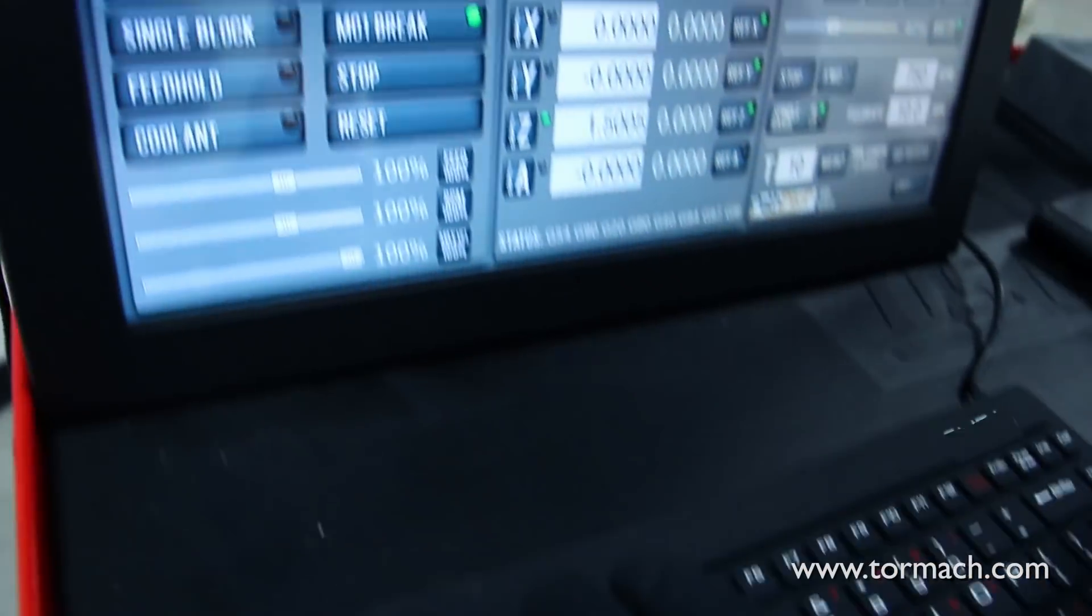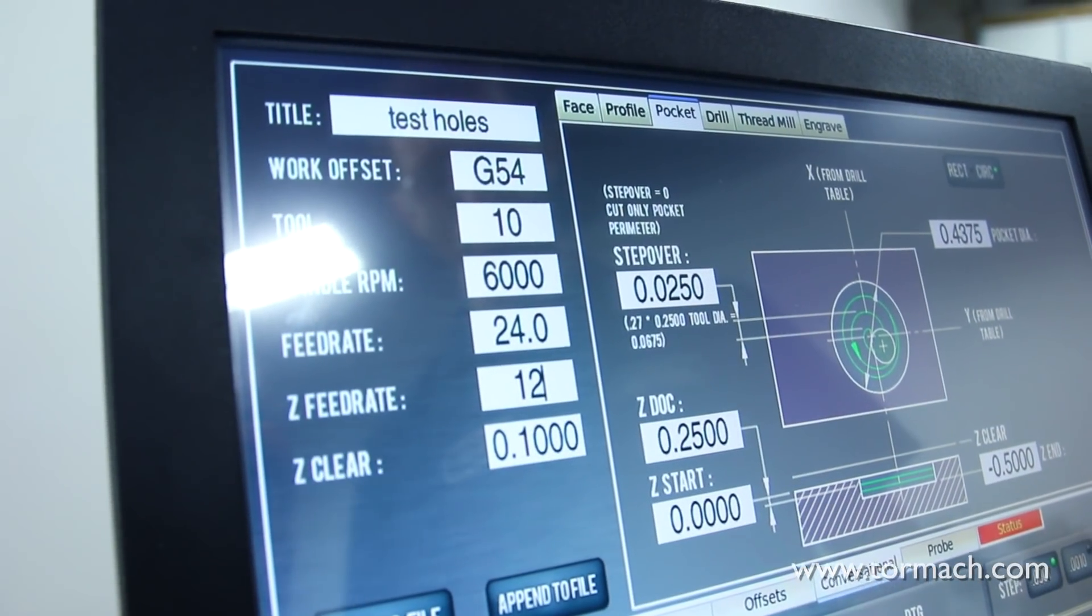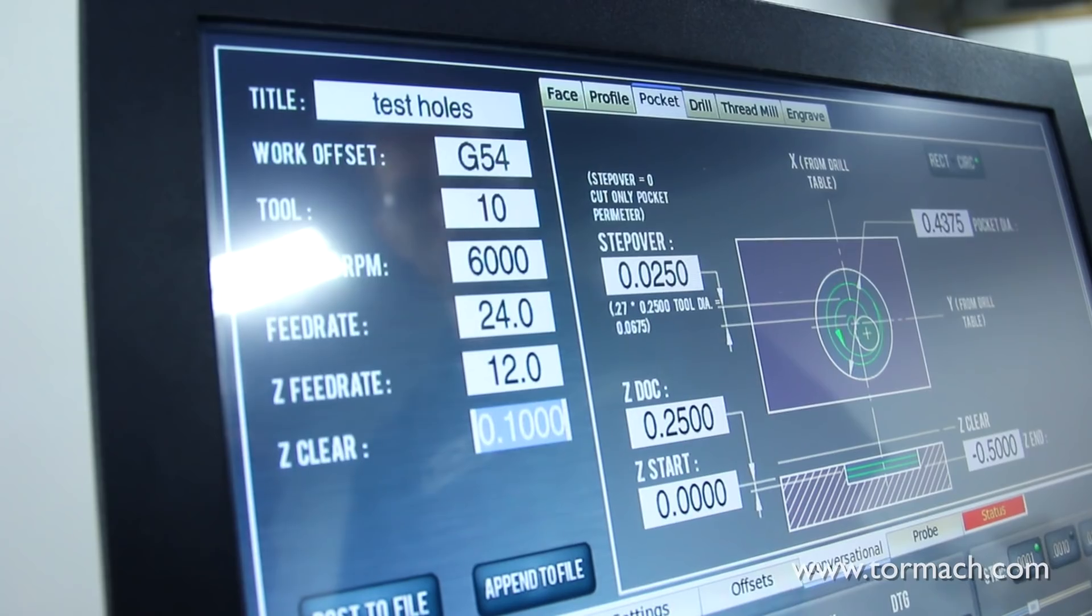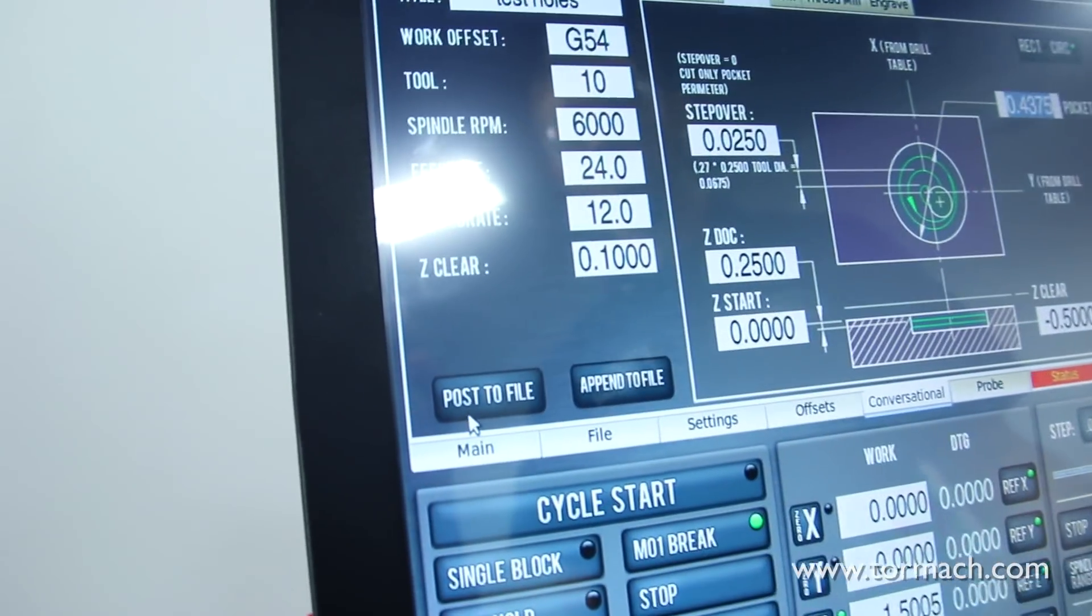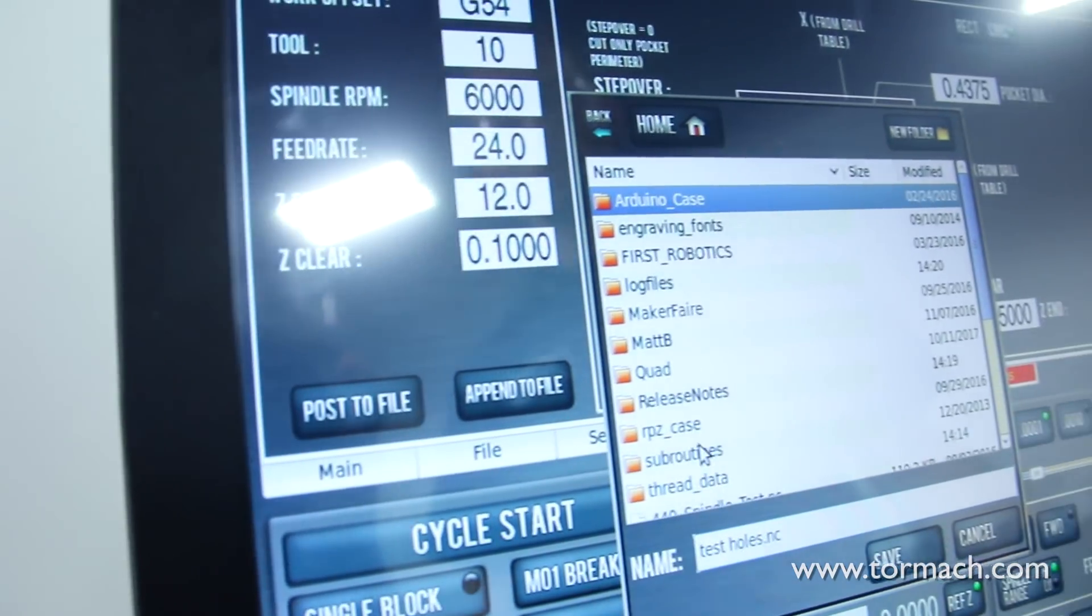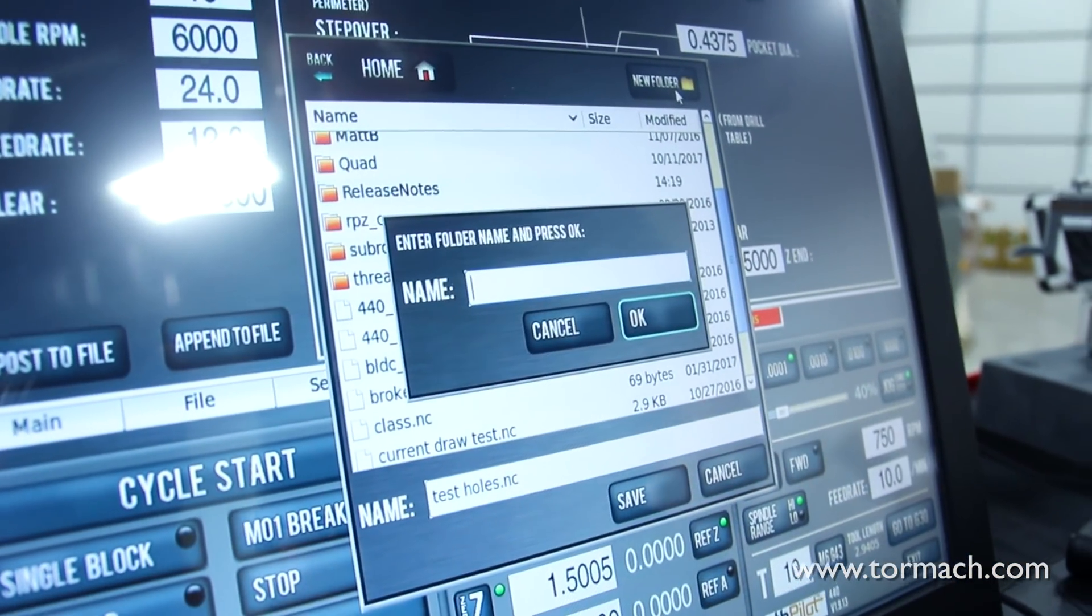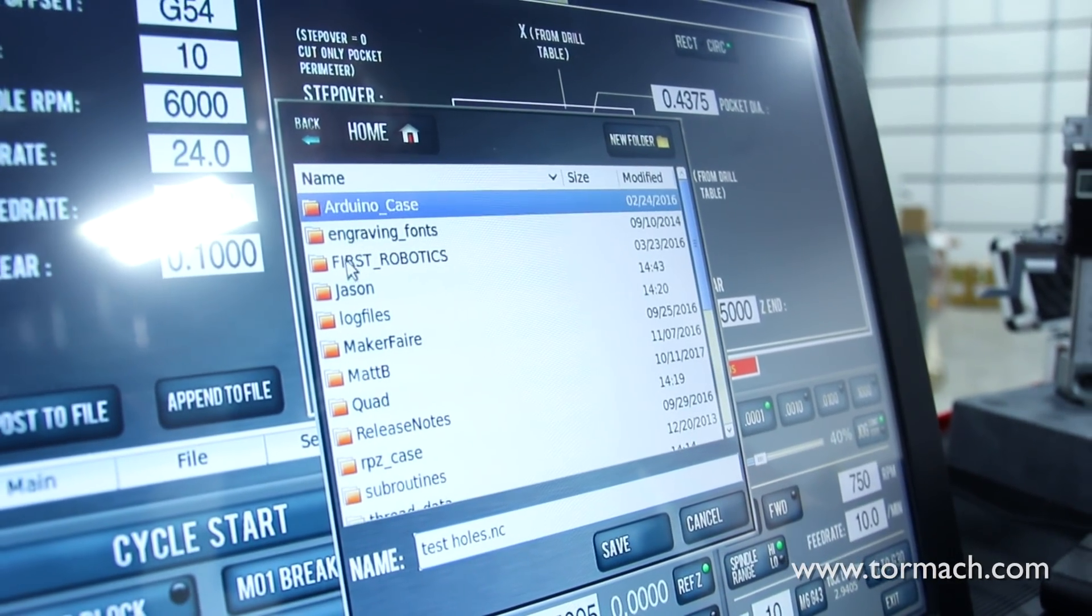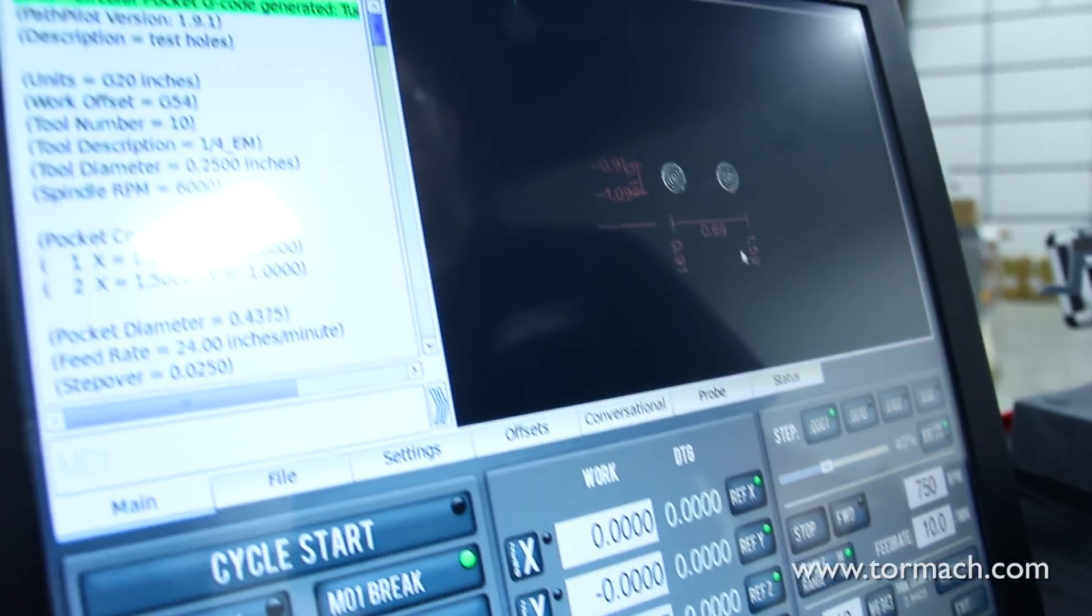I'm going to use half of that for our Z feed rate, and our clearance plane we'll leave at a hundred thousandths. From here we can hit post. We can create a folder to store our project in so we can find it easily later. Let's call this one test holes and we'll save that file.